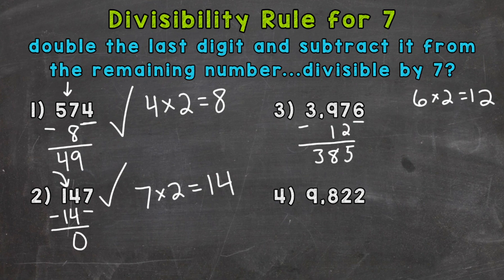385 is still kind of a large number there in value, a three-digit number. So we're going to repeat our steps, actually. So what we're going to do, let's take a look at our last digit, 5, and double it. So we know 5 times 2 equals 10. So we can do 38 minus that 10, and that gives us a remaining number of 28.